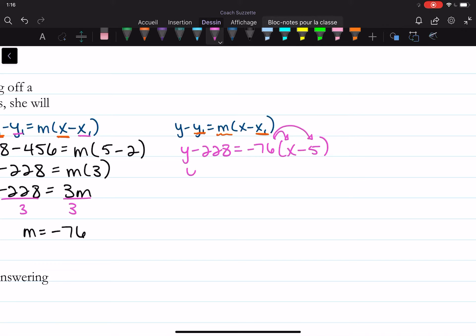Distribute here and here. So I have y minus 228 is equal to negative 76x. And then 76 times 5 is 380.